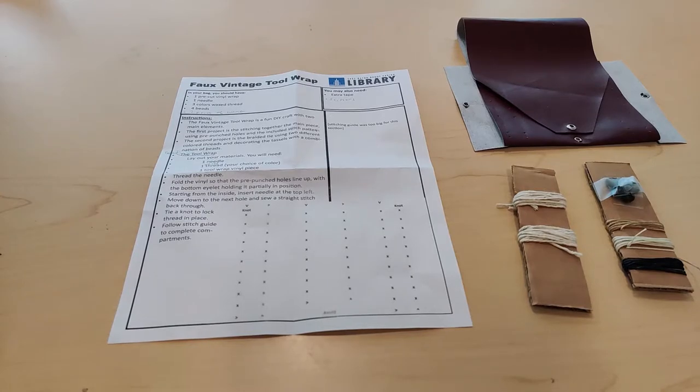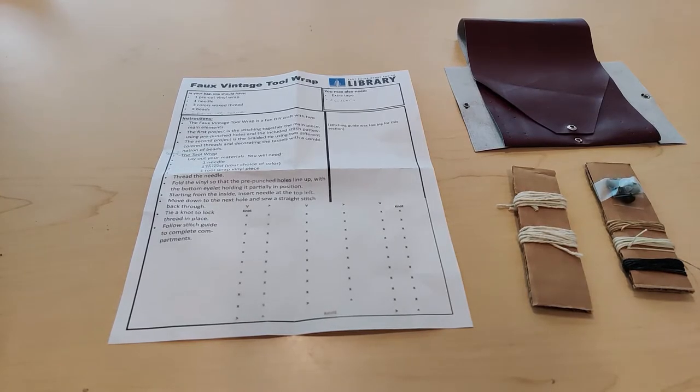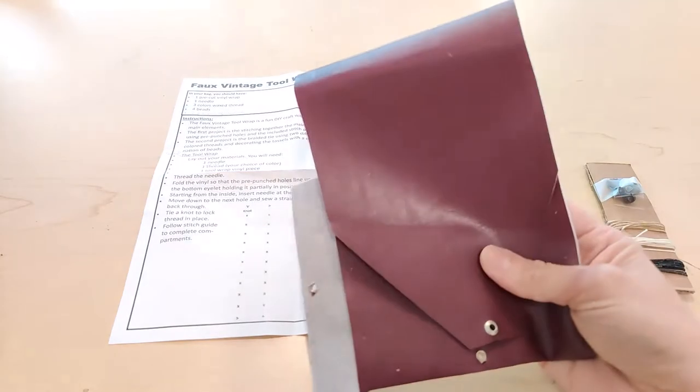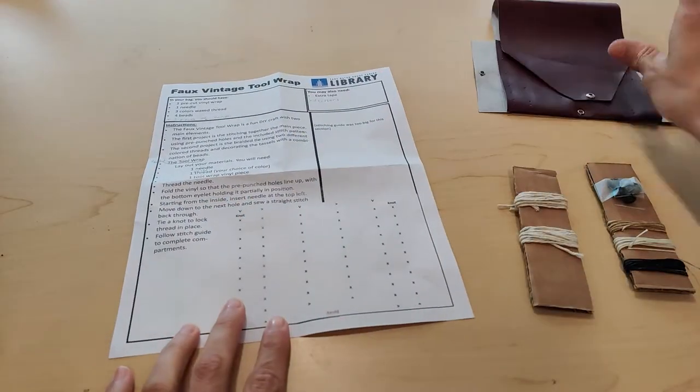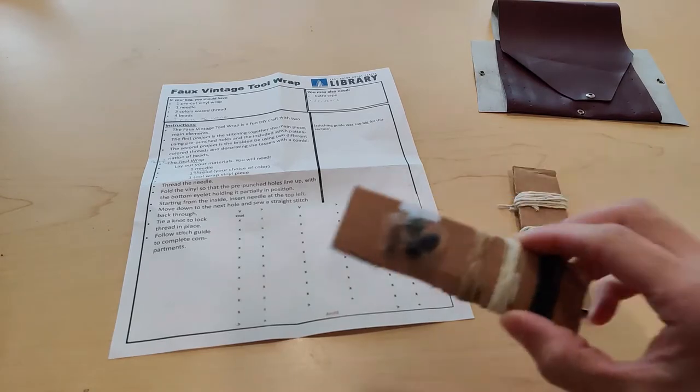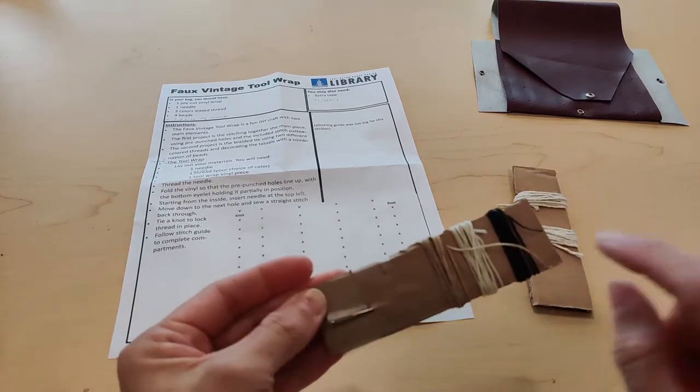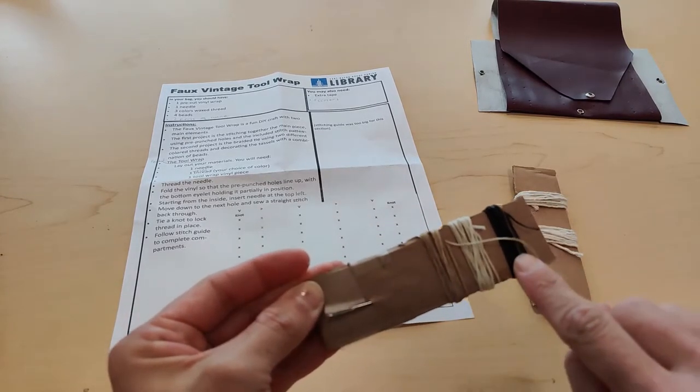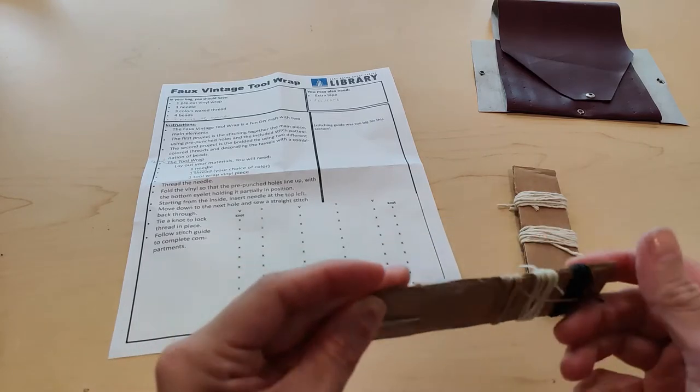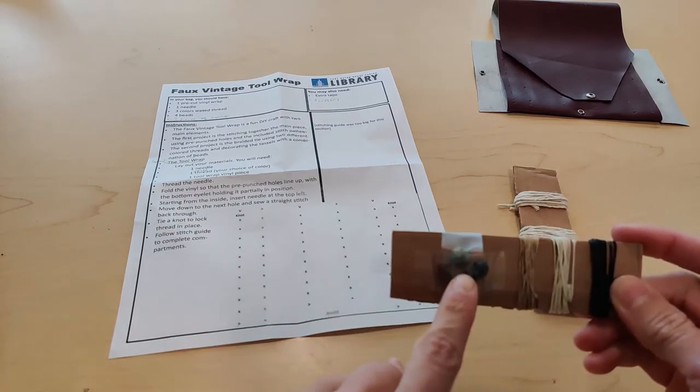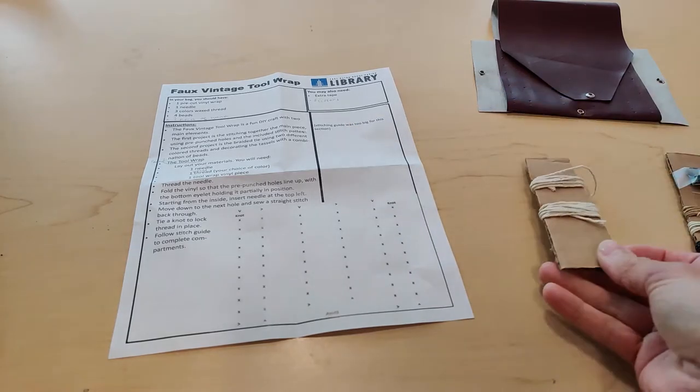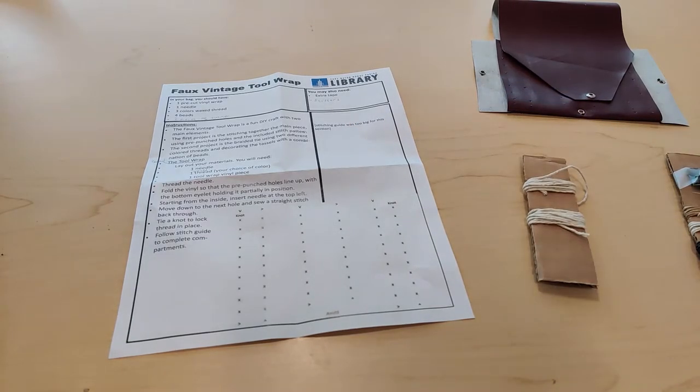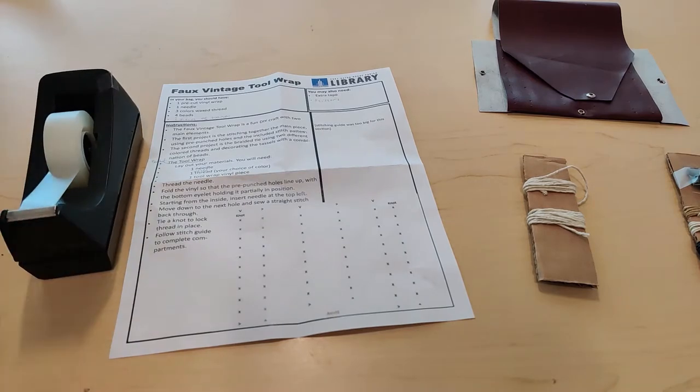If you picked up a kit from the River Cinder Branch Library, it should contain one piece of pre-cut vinyl that also has holes punched into it, one needle, three pieces of colored waxed thread, four beads, and two pieces of twine. You may also need some extra tape and a pair of scissors.